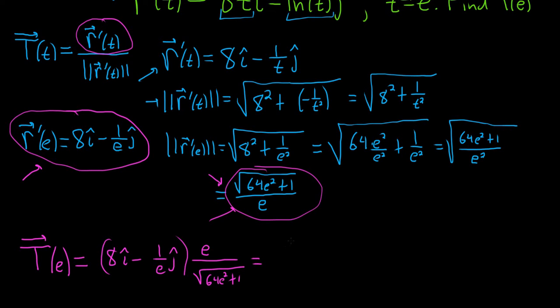Then you can distribute it. So you'll get 8e over the square root of 64 e squared plus 1, and this is i hat. And look at this, this is beautiful. The e's will cancel here. So minus 1 over the square root of 64 e squared plus 1 j hat.